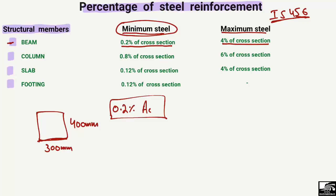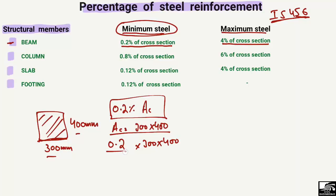The cross-section area of this beam is Ac = 300 × 400 mm². To find the minimum steel requirement, we take 0.2% of this cross-section area: (0.2 / 100) × 300 × 400 = 240 mm². So the minimum amount of reinforcement to be provided for this beam cross-section is 240 mm².